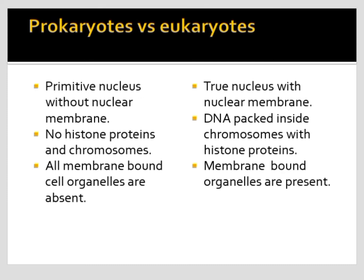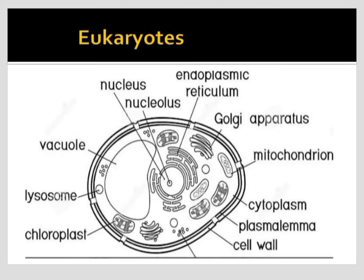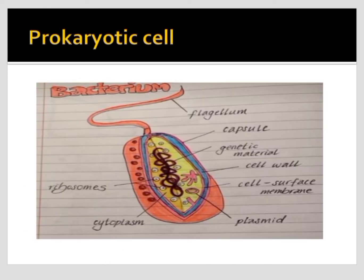In prokaryotes, without these organelles, how do they perform functions? They contain ribosomes. In eukaryotes, all cell organelles are present — endoplasmic reticulum, nucleolus, nucleus, vacuole, lysosome, chloroplast, cytoplasm, and others. In prokaryotes, all these are absent except the genetic material, ribosomes (70S type), proteins, cell wall, and cell membrane.